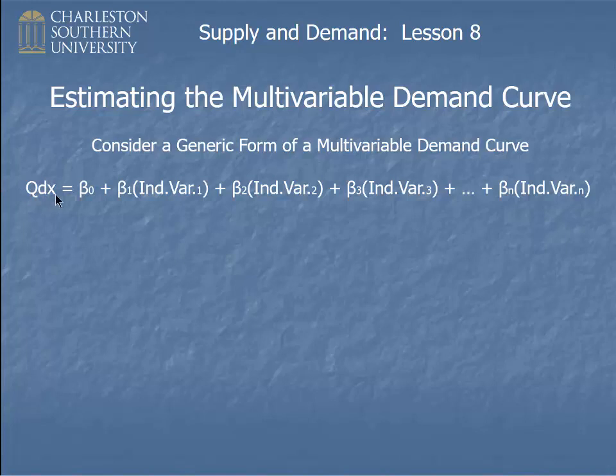is equal to beta zero plus beta one independent variable one plus beta two independent variable two and so forth.